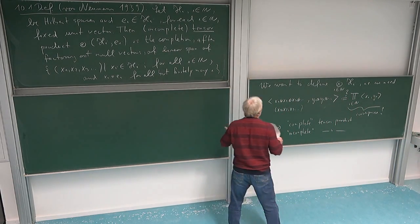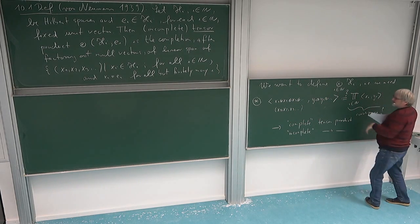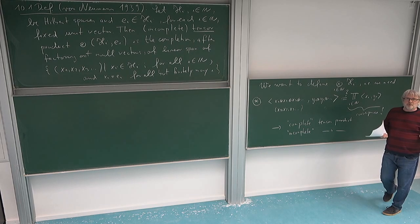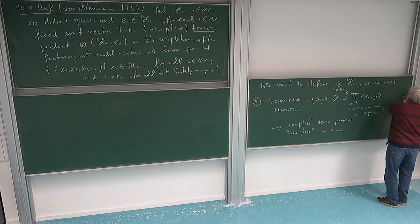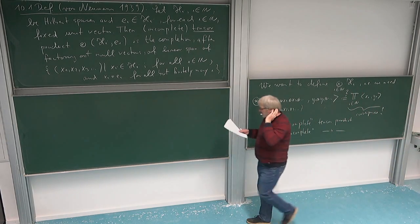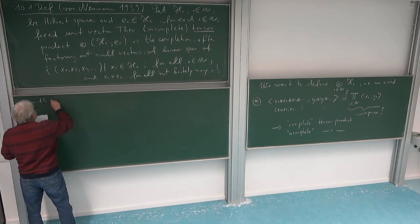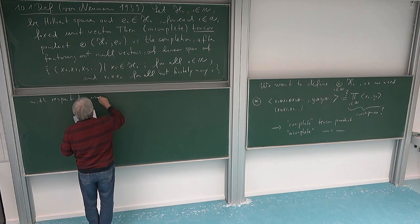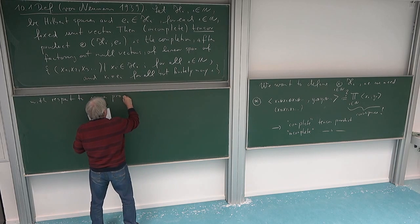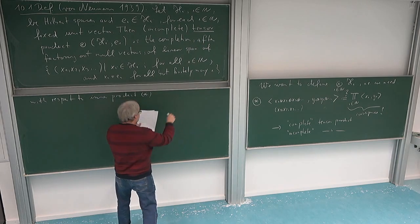I take the completion of the linear span of such sequences, with respect to the inner product given by the formula — which for any two choices X and Y is essentially a finite product, because the tail factors starting from some point are all equal to one. So the real information is just a finite product. This is the completion with respect to the inner product given by that formula.